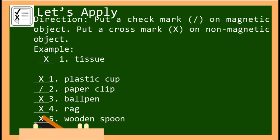Now let's check your work, kids. For number one: cross mark. Number two: check. Number three: cross. Number four: cross. And number five: cross mark. Very good, you did a great job!